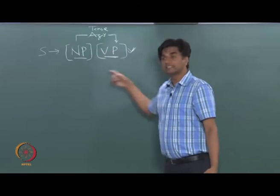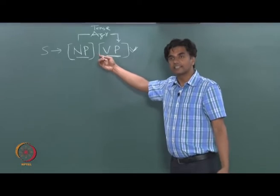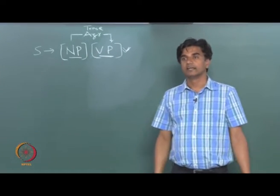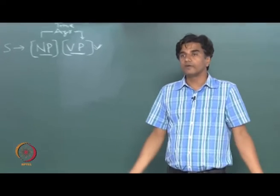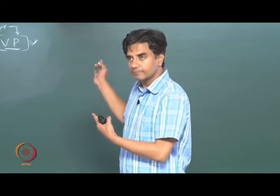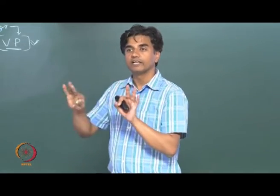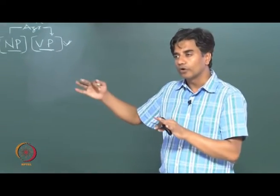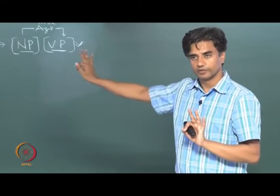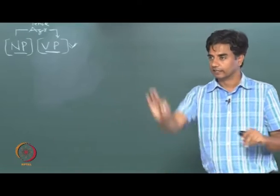The idea of movement also takes care of agreement between the subject and the structure, and this canonical structure is also retained. Of course, the problem is this does not tell us much about how a subject NP gets nominative case or how an object gets an objective case. But this is the sentence, and in order to explain more, we do not want to lose originality.